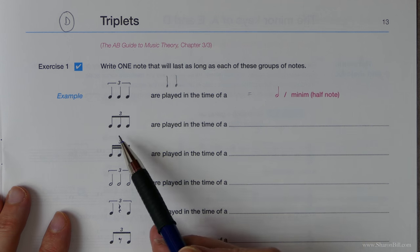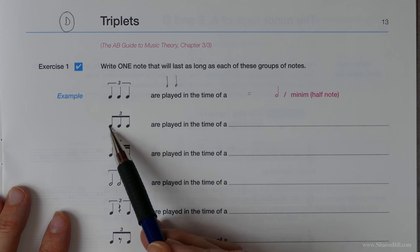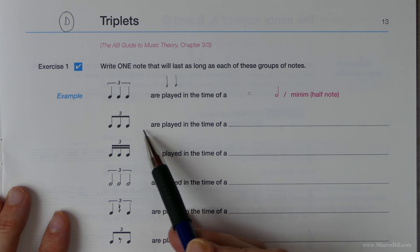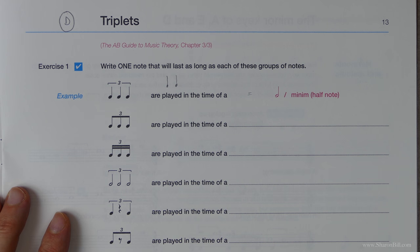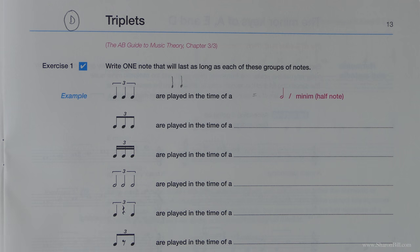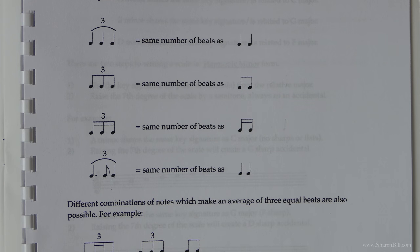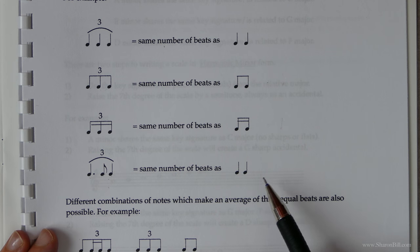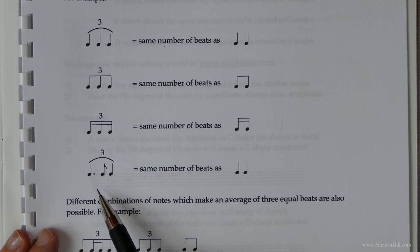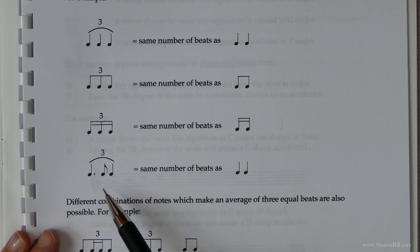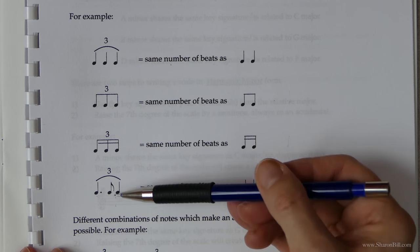Two crotchets, two quarter notes, ultimately equal the time value of a minim or a half note, so it's literally just squishing three into the time of two. To continue that vein of thought, three quavers would be squished into the time of two quavers or eighth notes and they would be in the time of one crotchet or one quarter note.